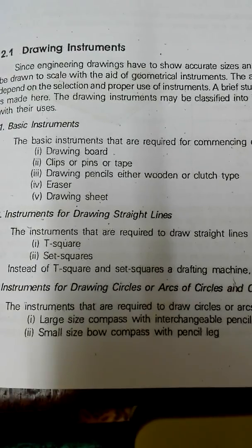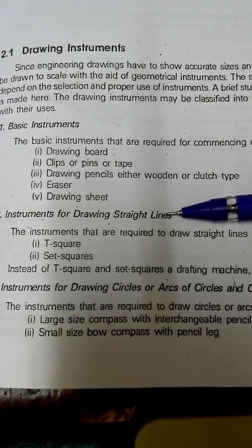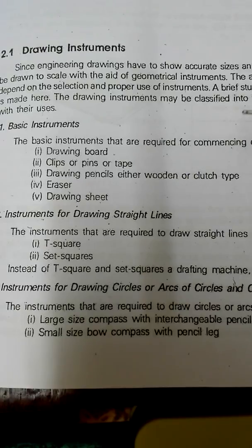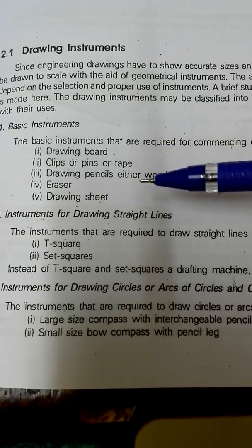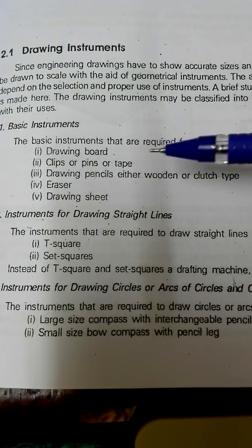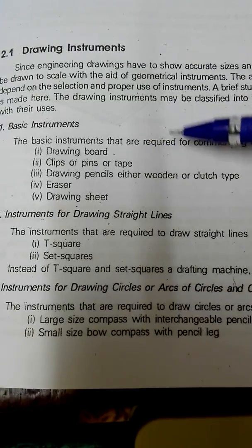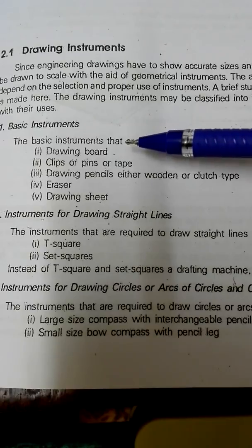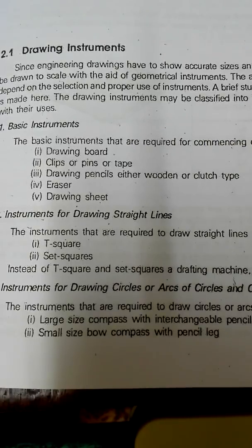Drawing is just like a language — as we use A for apple, B for ball, C for cat, D for dog — engineering drawing also has a similar method where each line indicates something specific. A thick line indicates the object, and a thin line is used for projection lines. There are different types of lines, which we will see in the next video. The basic instruments are: drawing board, clips, drawing pencil, eraser, and drawing sheet — and we'll also look at the types of drawing sheets.